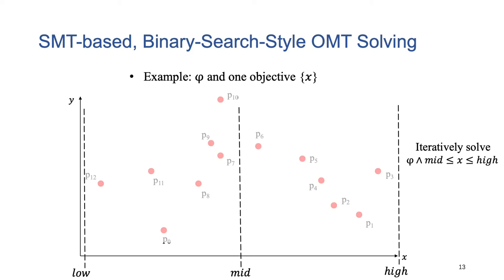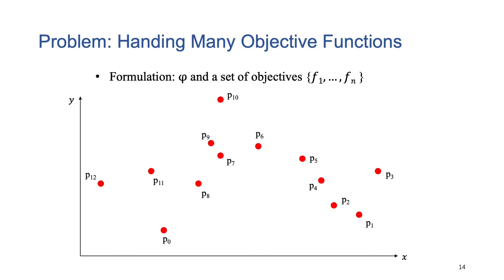To solve OMT instances, we use an SMT-based binary search style algorithm. Consider a simple example here. It has one objective, x. Essentially, we attempt to find larger models repeatedly, during which we update the low, middle, and high for the variable x. For example, suppose that in the first round, the SMT solver gives us a model P6. In the next round, we will update the low and middle for the variable x. Eventually, we will find the best model P3.